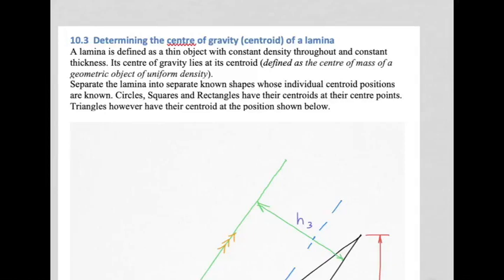So today we look at laminas, the center of gravity of a lamina. First of all, what is a lamina? The definition says basically that it's a thin object and all the way through the object the material is of the same density.